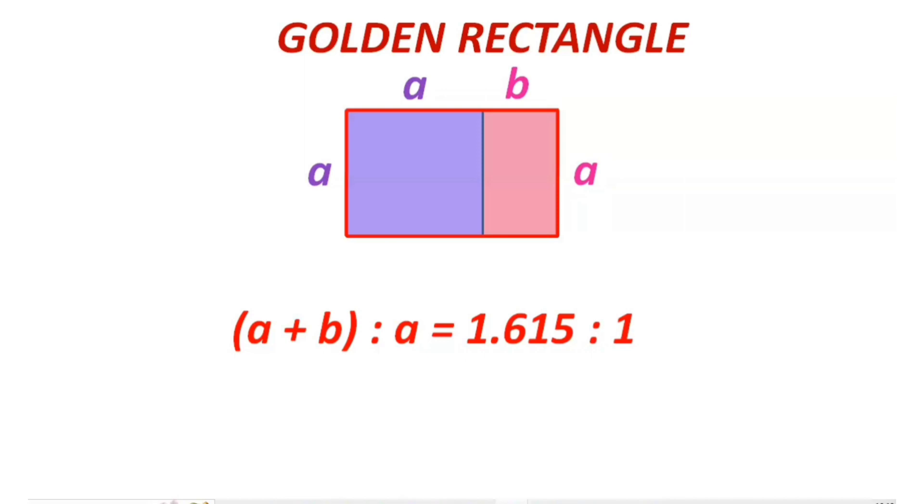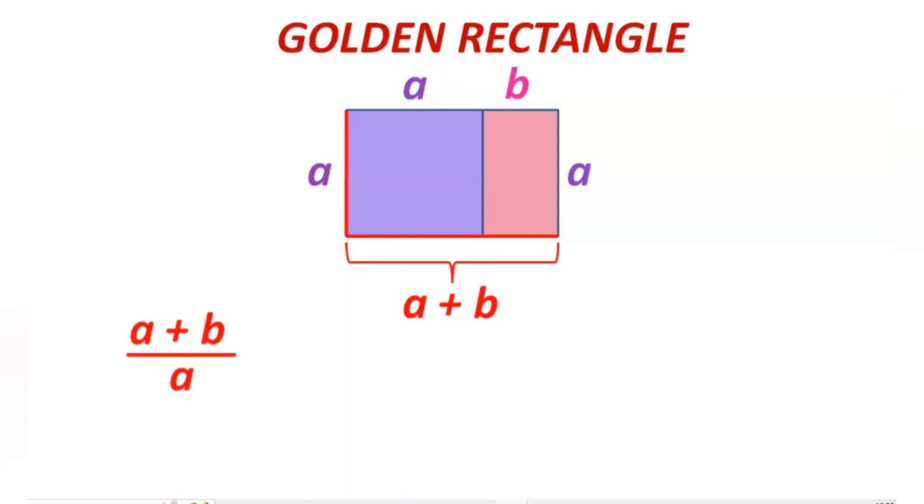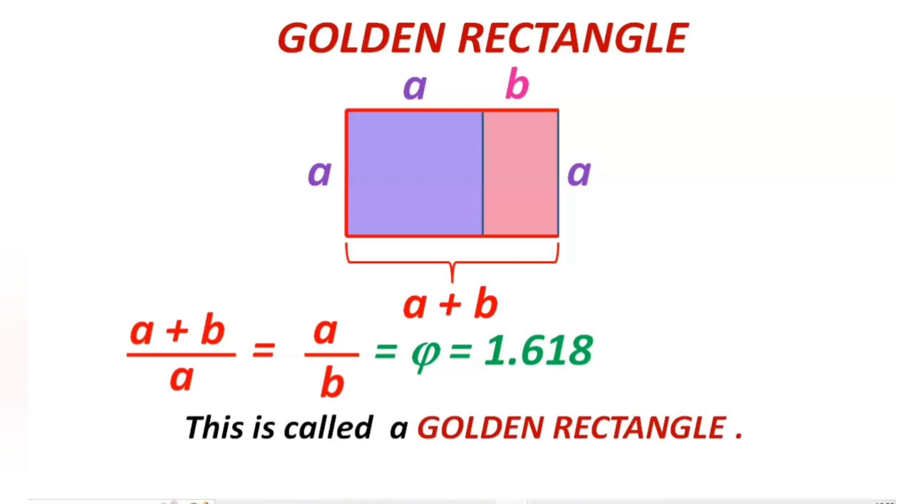Now let us see what are the conditions for a rectangle to be a golden rectangle. Let us take a square of side a and attach a rectangle with one side same as a and let the other side be b. If the total length (a + b) divided by a is same as a by b, which is equal to phi, that is 1.618, then this is called a golden rectangle.